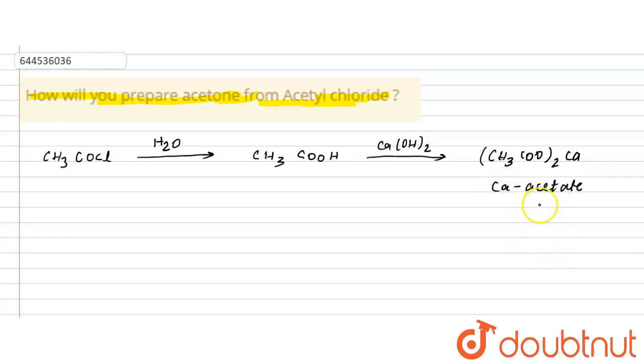Now when this calcium acetate salt - it's very important - if you do the distillation of this calcium acetate salt, by process of distillation, it finally gives you acetone which is CH3COCH3. This is acetone which you finally get as the product.